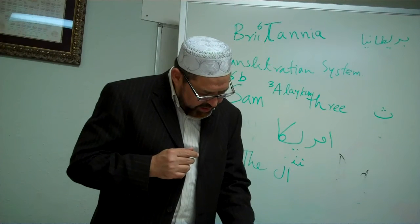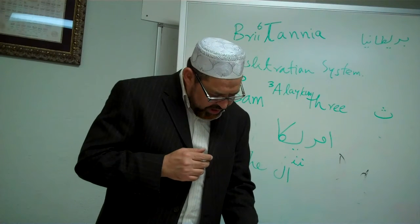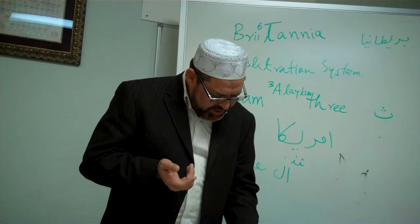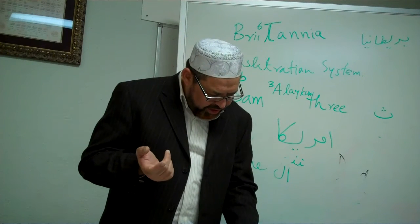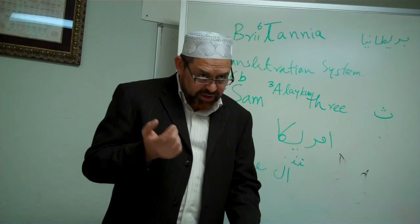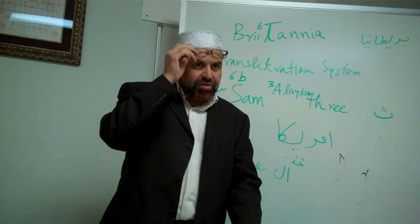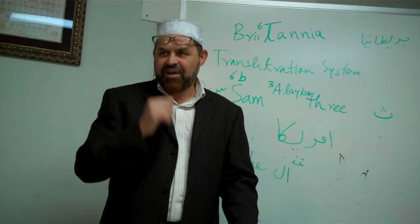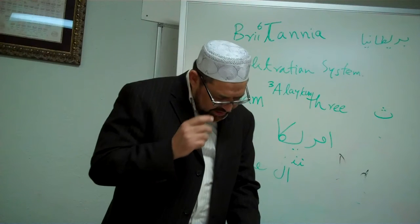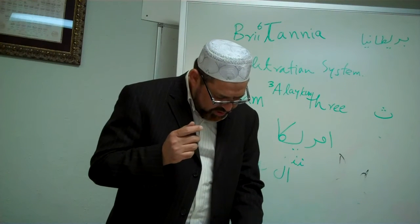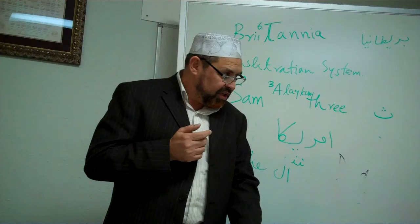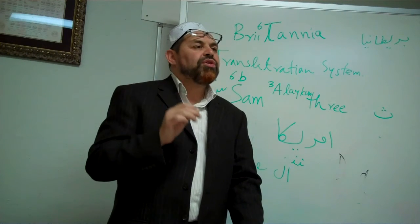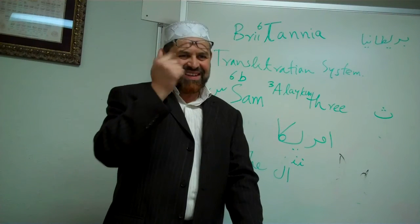Then we have Algeria, and the capital is Algiers. Then Tunisia — Tunis. Then number five, Libya, and Tripoli is the capital. The Arabic name of Tripoli is Tarabulus. And then we have Egypt — the capital is Cairo, and the Arabic name is Al-Qahira. By the way, Qahira also uses Al in the beginning: Al-Qahira.